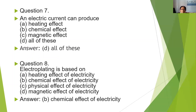An electric current can produce — heating effect, chemical effect, or magnetic effect? Yes, it produces all of these. So the answer is D, all of these. Electroplating is based on which effect? Electroplating is an example of the chemical effect of electricity. So the answer is the chemical effect of electricity.